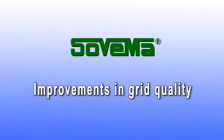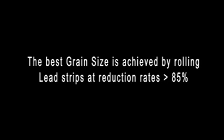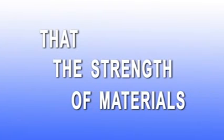Solvema presents improvements in grid quality. Upgrade of positive grid quality by reducing the grain size. The best grain size is achieved by rolling lead strips at reduction rates greater than 85%. Research has shown that the strength of materials depends on the size of the crystals.